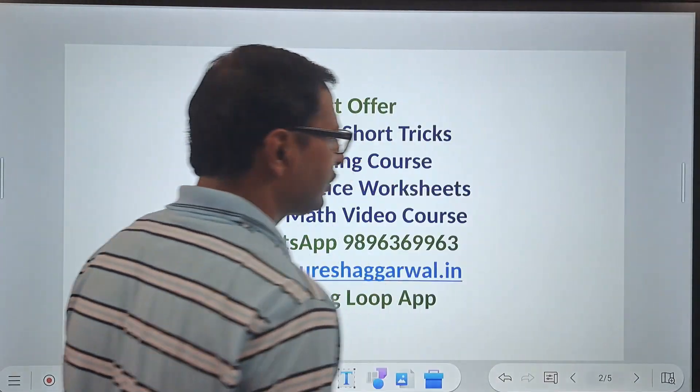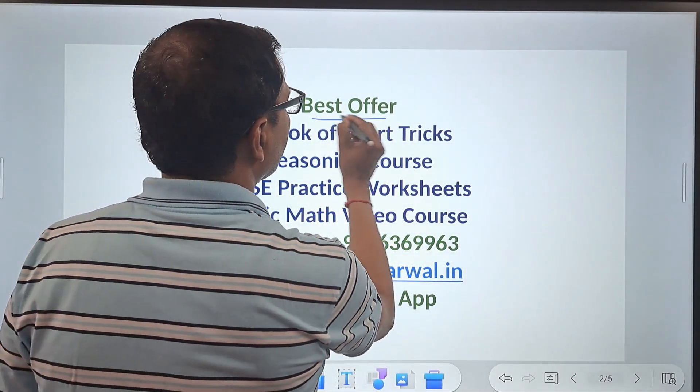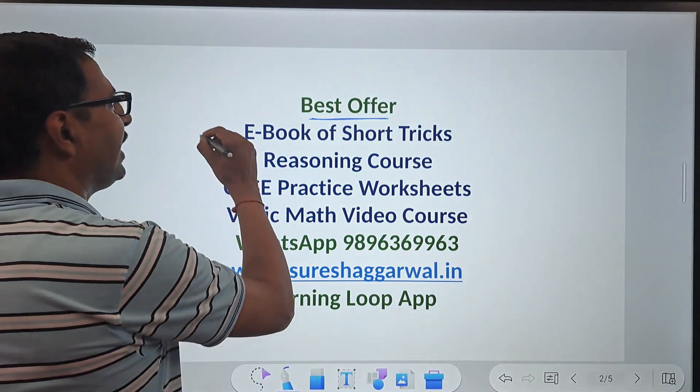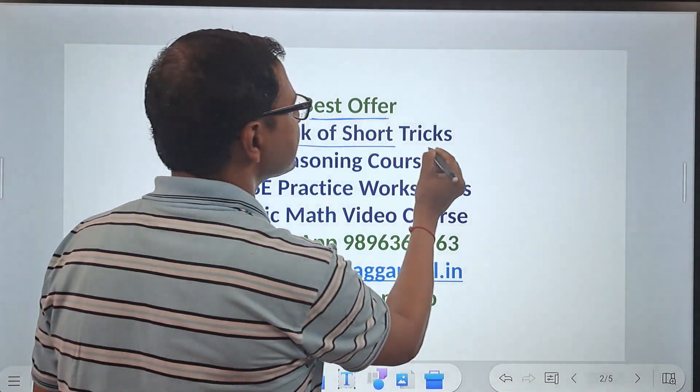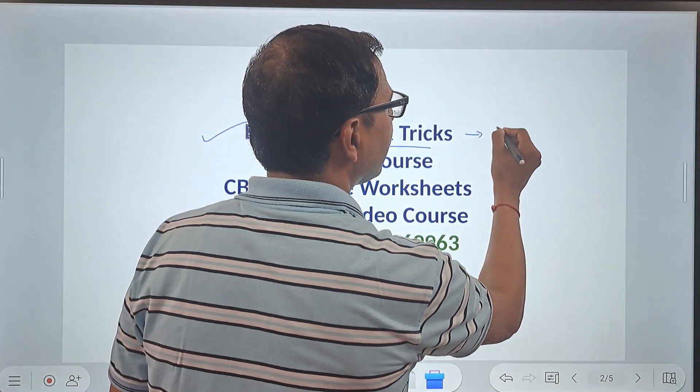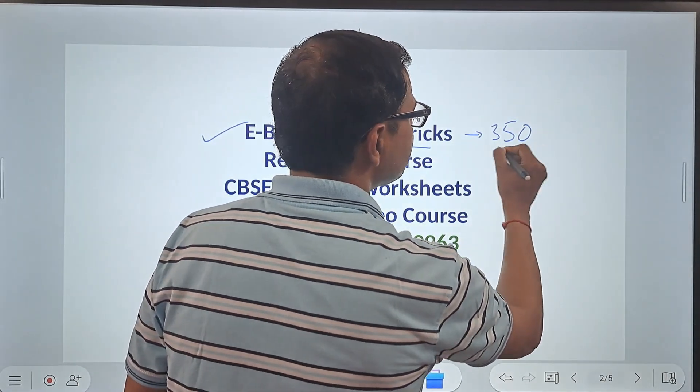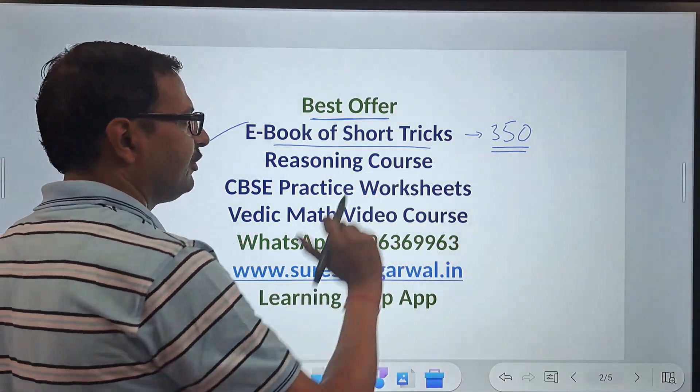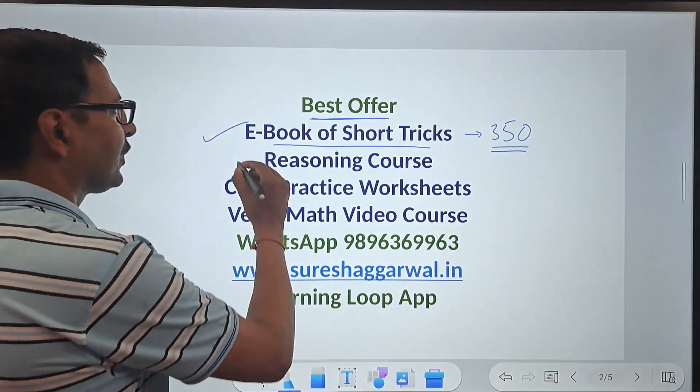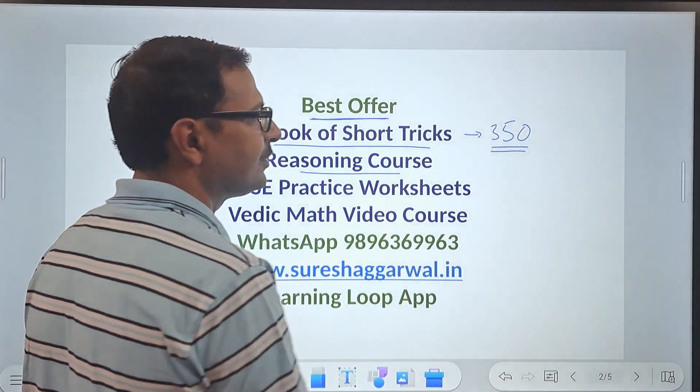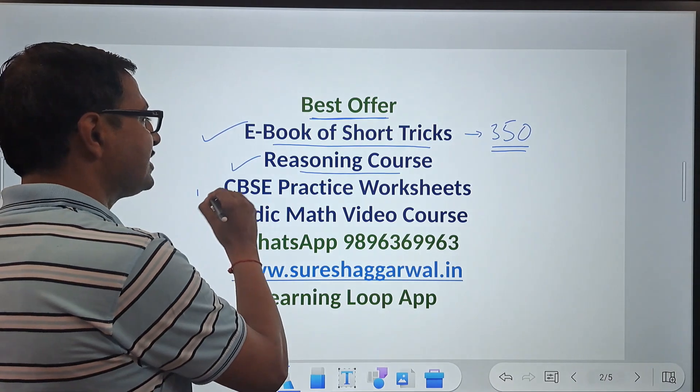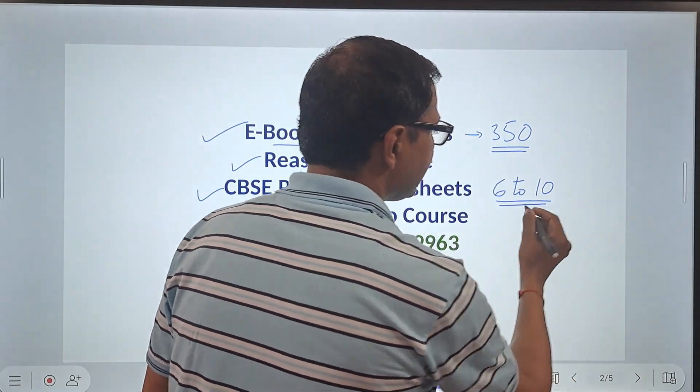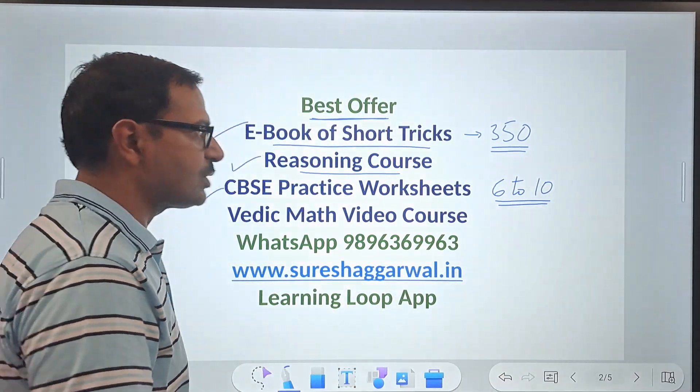Before I take up the topic, let me tell you about the best offers going on right now on Suresh Agarwal's Mathematics Shortcuts. We have the complete ebook of short tricks in which there are around 350 short tricks arranged in 24 different topics and video support is also given with that. We have the complete reasoning course with video support. We have the CBSE practice worksheets of class 6 to 10 complete sets and some of the classes are with video support.